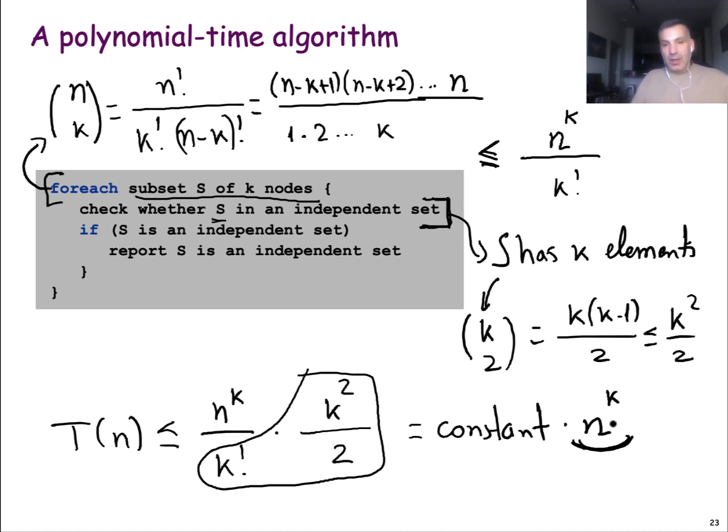So this is an example of an algorithm that even though it has a polynomial running time, we would think of it as an efficient algorithm only for small values of k—efficient only for low k.